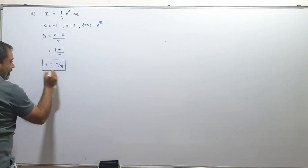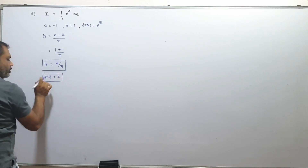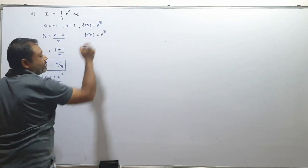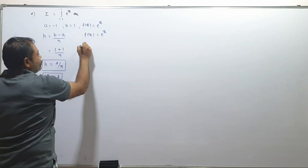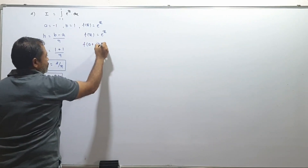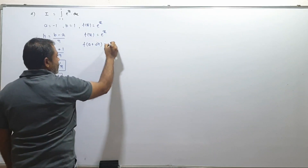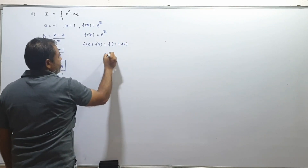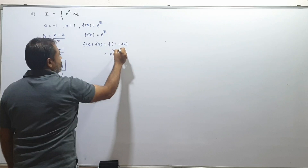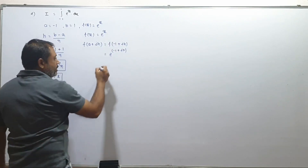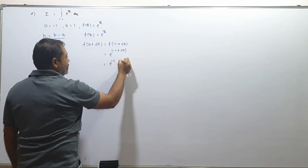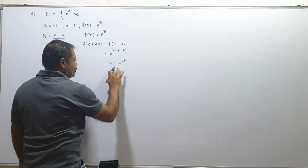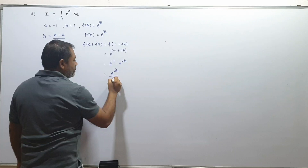So h equals 2/n, and b equals 2 (meaning nh = 2). Now f of a plus i·h: since a equals minus 1, we get f(minus 1 plus i·h). So f of (minus 1 + i·h) = e raised to (minus 1 + i·h) = e^(minus 1) · e^(i·h).